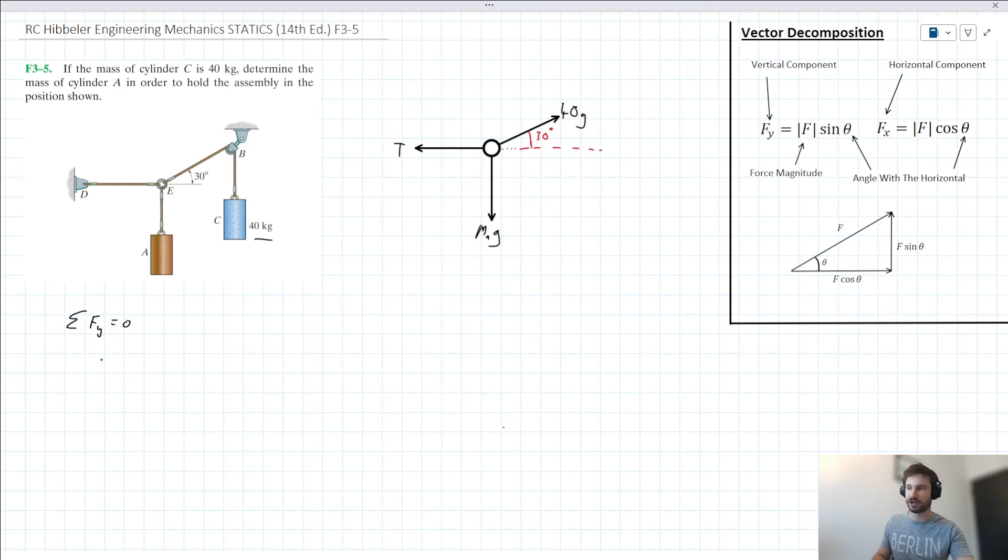We're saying what's going up equals what's going down. Going up, we've got the vertical component of our 40G force, and going down, we've got M_A times G.